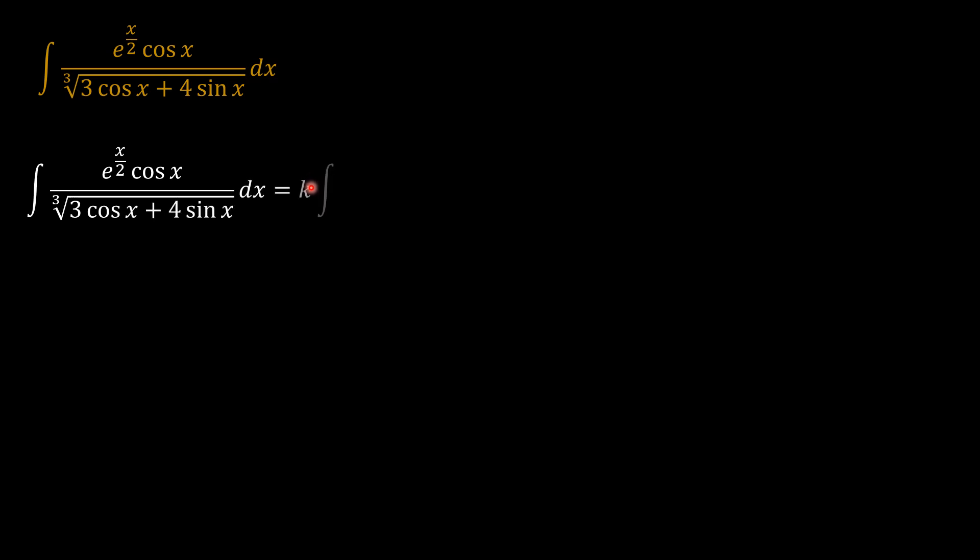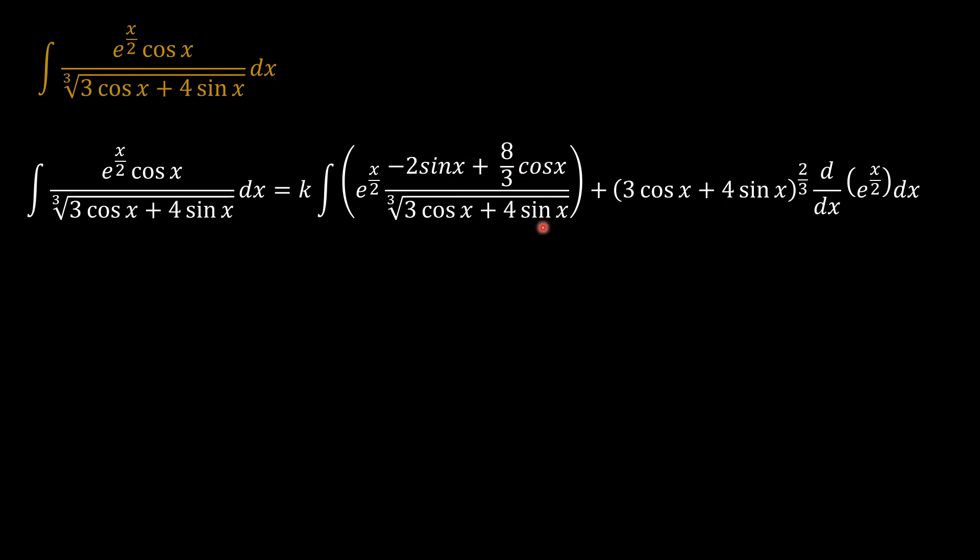So that when you consider the product, the derivative of the product of this to the power 2 over 3, and this, it should be okay. So I'm trying to figure out the product k so that when I get the derivative of this, which is this, times the derivative times this.